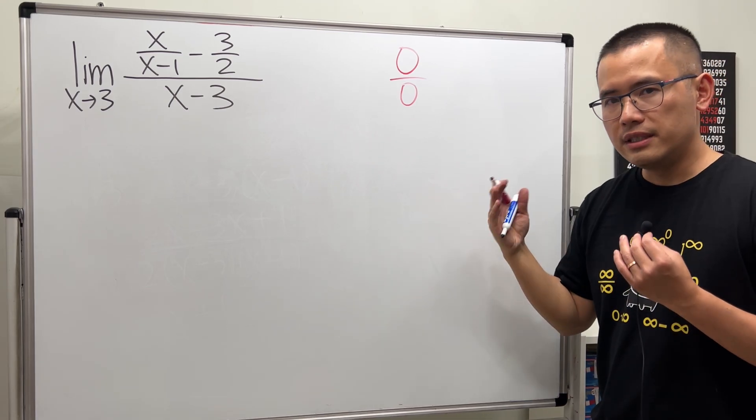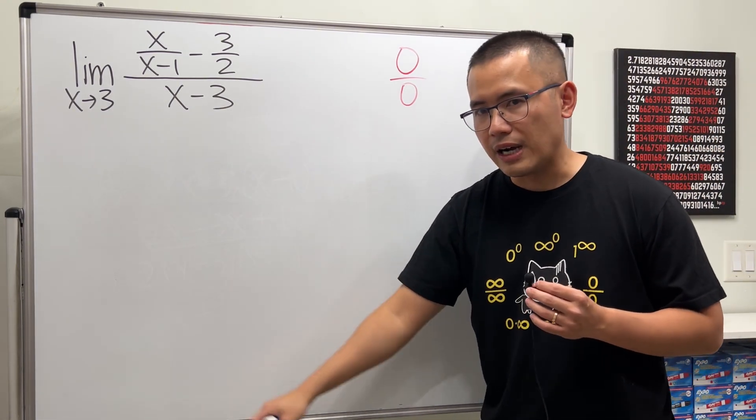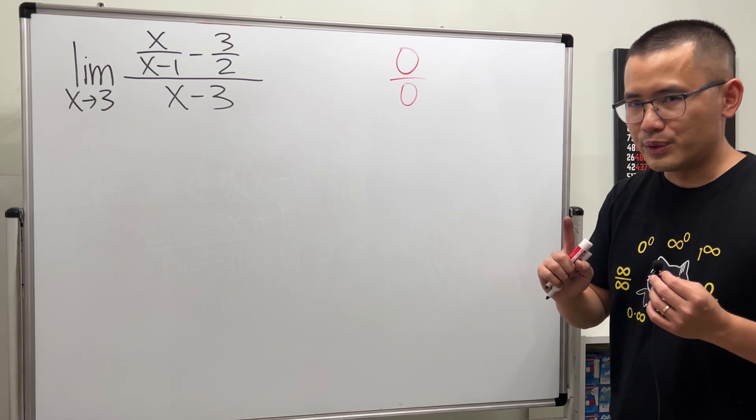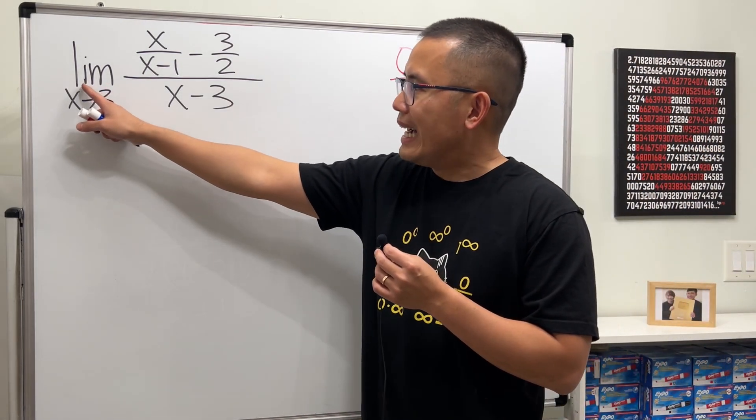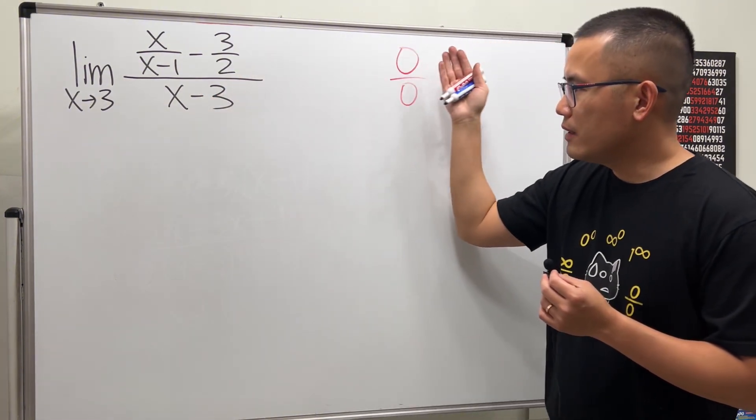0 over 0, this is indeterminate. We don't know the answer yet. We have to do more work to figure it out. Now here is a secret: if we have the limit as x approaching 3, and if you plug in you get 0 over 0, then I can tell you you are going to expect